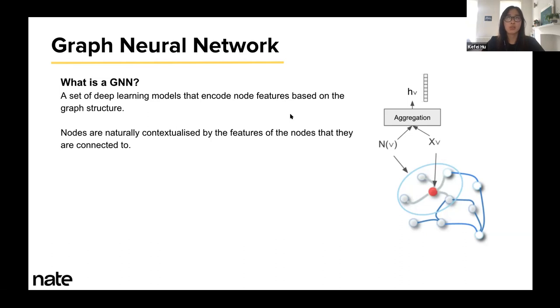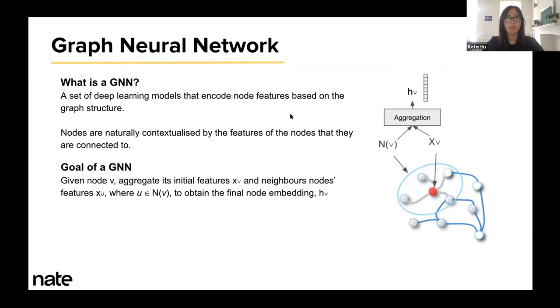Graph neural networks are a set of deep learning models that can be directly applied to graphs. They were introduced back in 2005, but started to gain popularity in the last five years due to their versatility to suit any type of problems. They work based on the idea that nodes, or entities, in a graph can be contextualized by the features of all the entities that they are associated with, just like how tokens in a sequence of text can be contextualized by its surrounding words. So the goal of a graph neural network is to compute a node representation that encodes its initial features as well as its connections. This node representation is represented as a fixed size vector like HV. By leveraging the rich information from HV, we can build much more accurate models for different types of tasks.